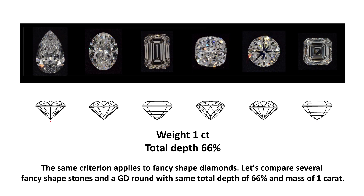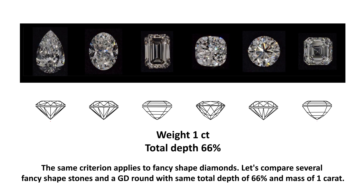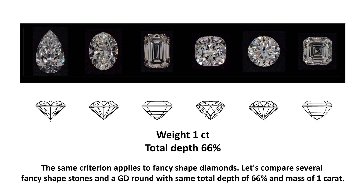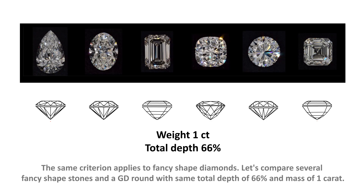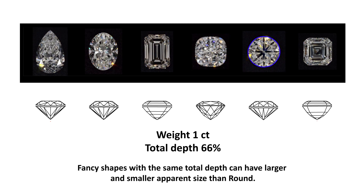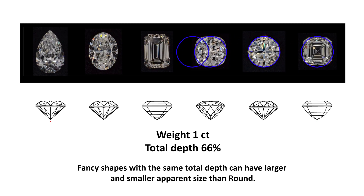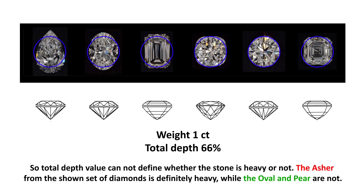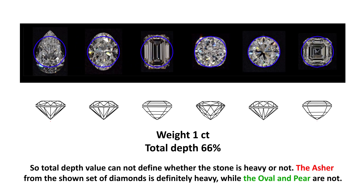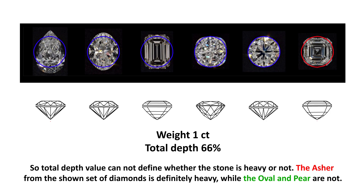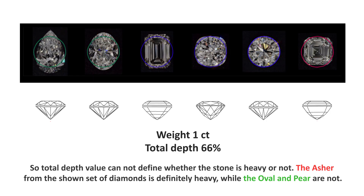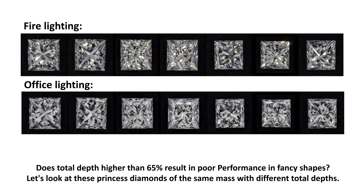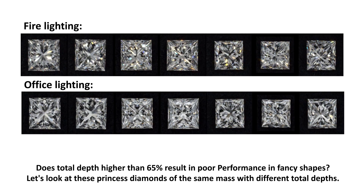The same criterion applies to fancy shaped diamonds. Let's compare several fancy shaped stones and a Good round with the same total depth of 66% and mass of 1 carat. Fancy shapes with the same total depth can have larger and smaller apparent size than round, so total depth value cannot define whether the stone is heavy or not. The Asscher from the shown set is heavy, while the oval and pear are not.